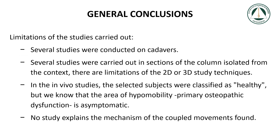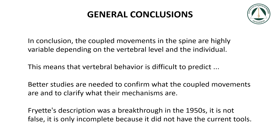Limitations of the studies carried out: several studies were conducted on cadavers, several were carried out on sections of the column isolated from context, and there are limitations of 2D or 3D study techniques. In the in vivo studies, the selected subjects were classified as healthy, but we know that the area of hypomobility — primary osteopathic dysfunction — is asymptomatic. No study explains the mechanism of the coupled movements found. In conclusion, the coupled movements in the spine are highly variable depending on the vertebral level and the individual. This means that vertebral behavior is difficult to predict. Better studies are needed to confirm what the coupled movements are and to clarify what their mechanisms are.